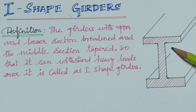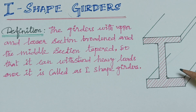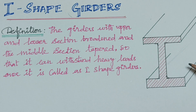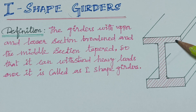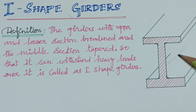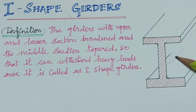Due to the depression produced, the upper part of the girder above the neutral axis is compressed, while below the neutral axis it expands. The stress decreases progressively from the top and bottom toward the neutral axis.